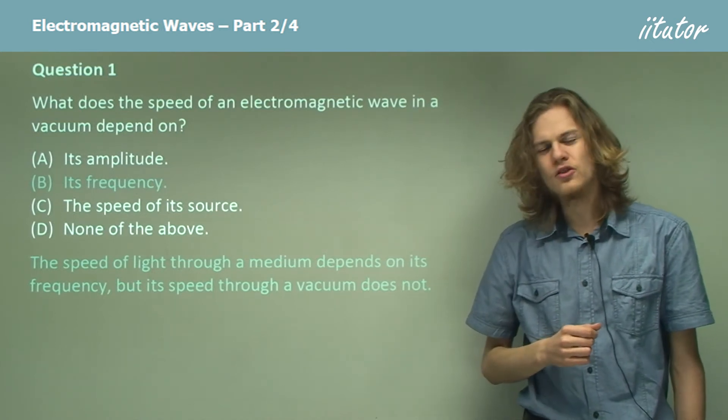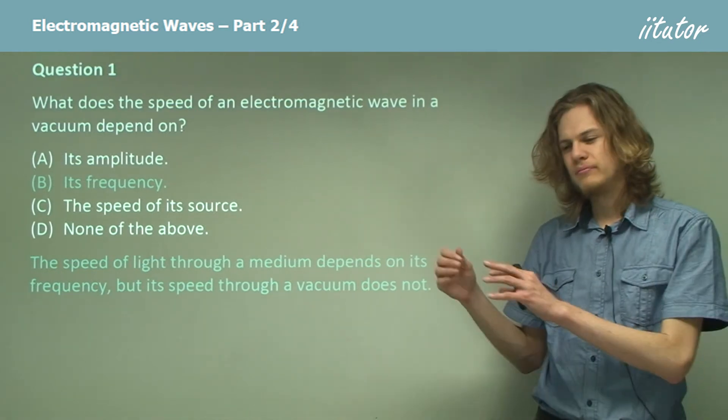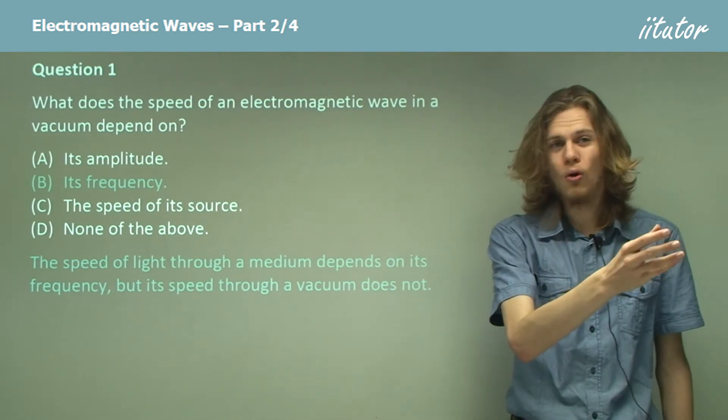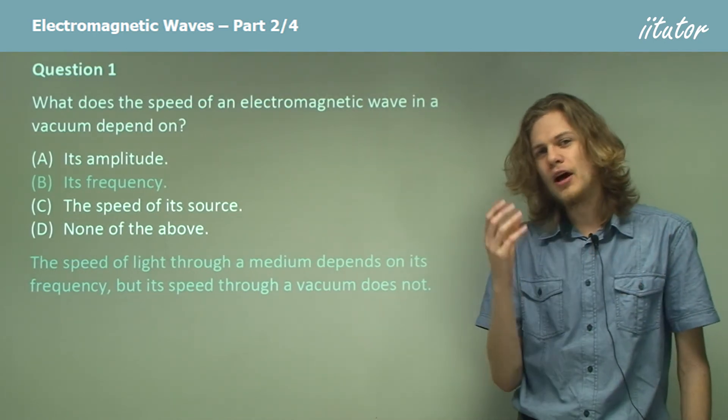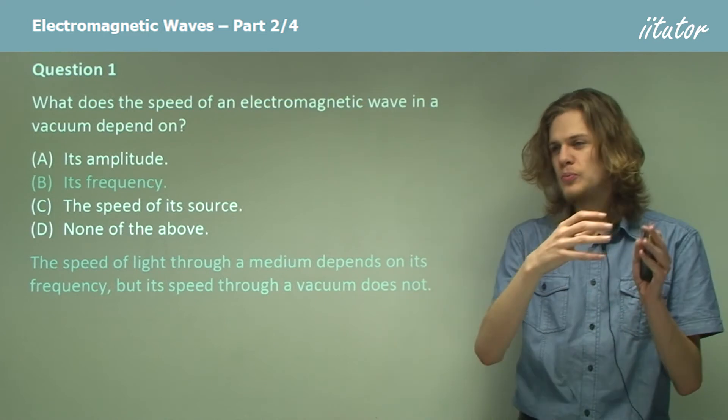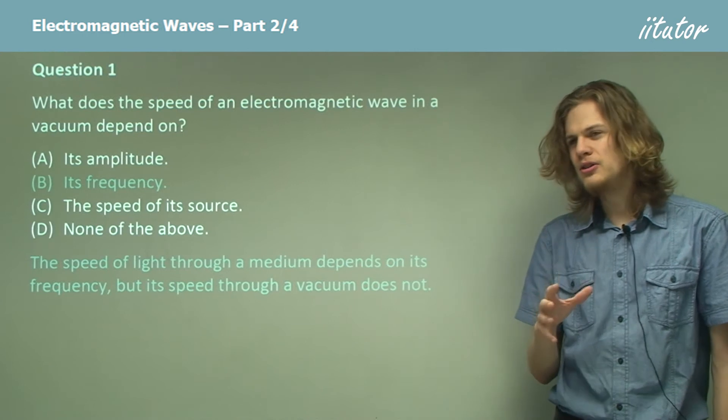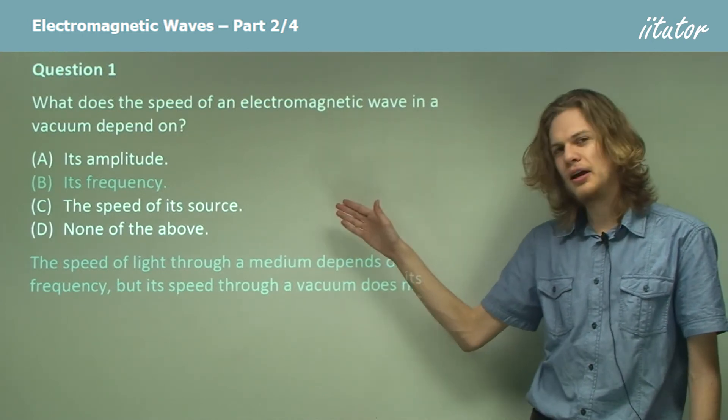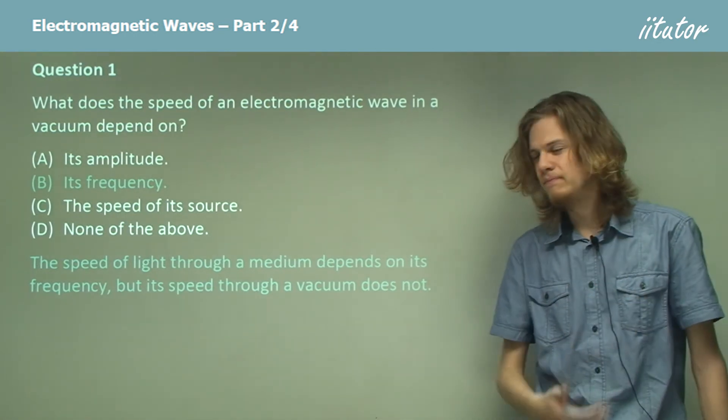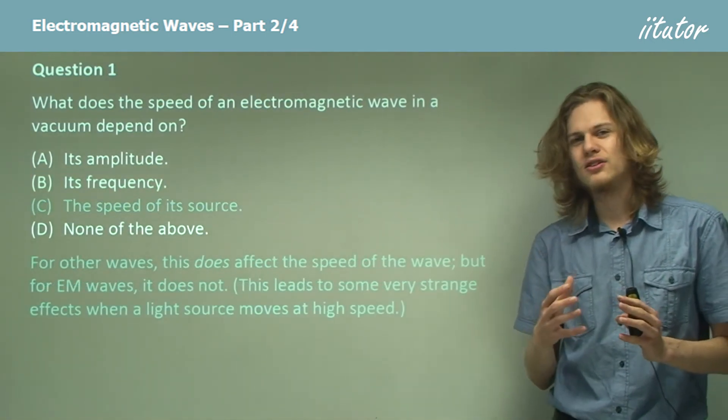How about C? This one looks likely. The speed of its source. Now we know that if we have a moving object, say a car, and from that car we throw a ball straight forward, that ball will end up moving faster than the car, simply because we're adding the speed of the car to the speed of the ball. We've learned a bit about this in relative motion. But it turns out that we can't increase the speed of light simply by moving very fast when we first start shining that beam of light. So in fact, the speed of the source does not affect the speed of light.